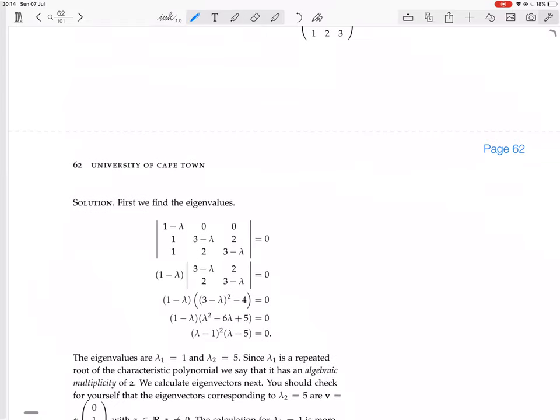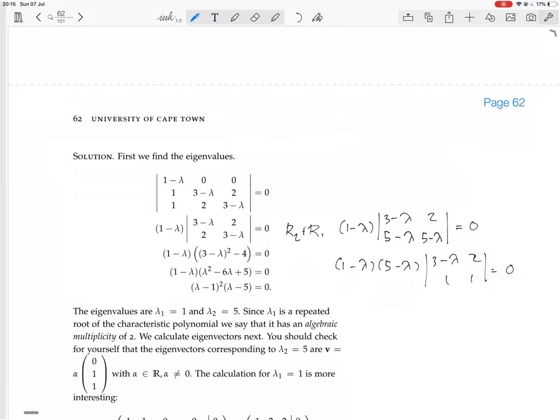I like doing this by Gauss reduction. You can change row 2 into row 2 plus row 1. Then you get 1 minus lambda, 3 minus lambda, 2, and row 2 will become 5 minus lambda, 5 minus lambda. I can factorize out the 5 minus lambda from the bottom row, and I have 3 minus lambda, 2, 1, 1 left.